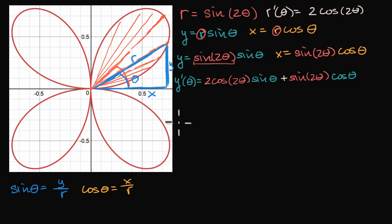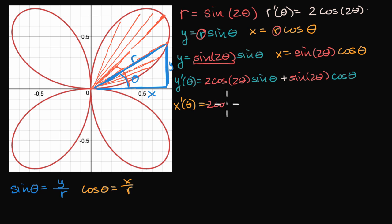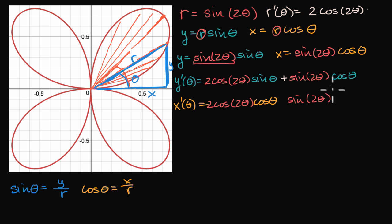And we can do the same thing for x. x prime of theta: the derivative of the first expression is two cosine of two theta, times the second expression cosine of theta, plus the first expression sine of two theta times the derivative of cosine of theta, which is negative sine of theta.